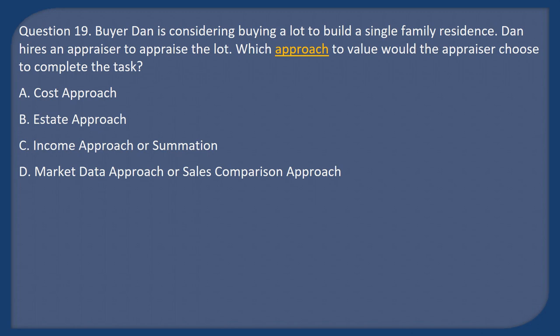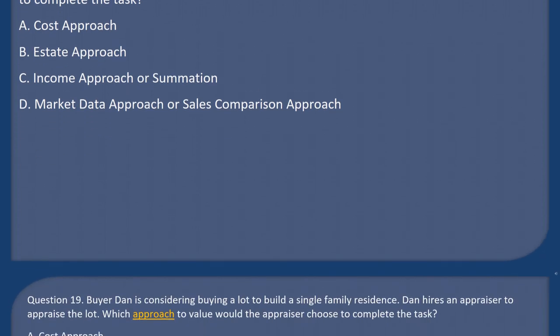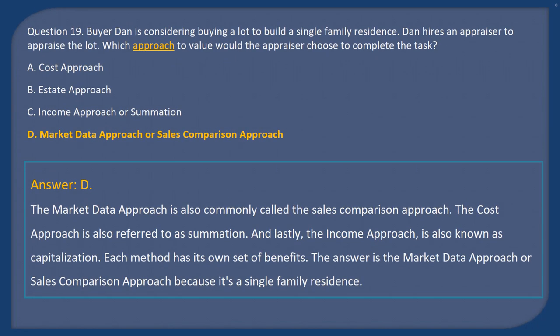Question 19: Buyer Dan is considering buying a lot to build a single-family residence. Dan hires an appraiser to appraise the lot. Which approach to value would the appraiser choose? A) Cost approach, B) Estate approach, C) Income approach (summation), D) Market data approach (sales comparison approach). Answer: D. The market data approach, also called the sales comparison approach, is used because it is a single-family residence. The cost approach is also called summation; the income approach is also known as capitalization.